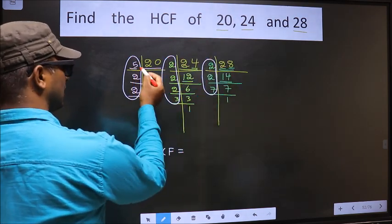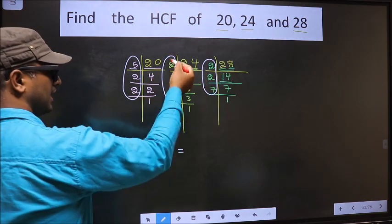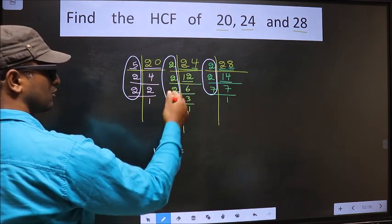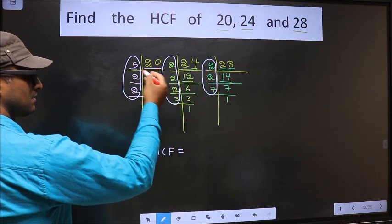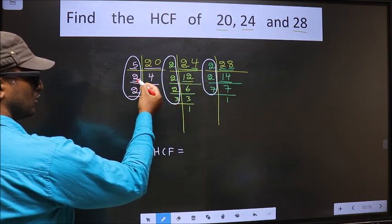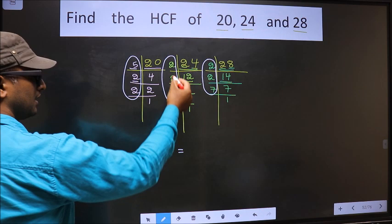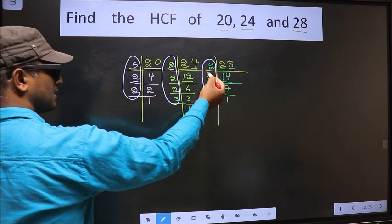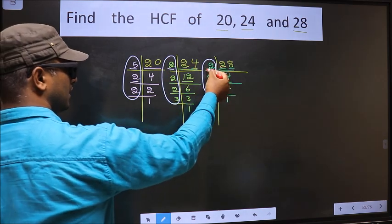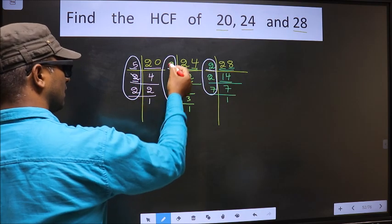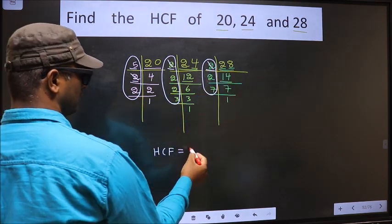Starting with the number 5. Do we have 5 here? No. So no need to check in the other place. So next number 2. Do we have 2 here? Yes. So go to the next place. Do we have 2 here? Yes. So now you cut 2 right here.